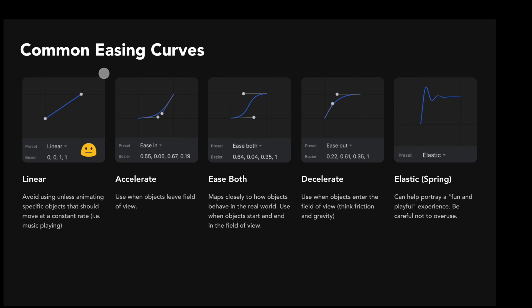Let's talk about easing. Easing is the physics of our interaction and can really help influence an interaction's smoothness. There are five main easing curves: linear easing, ease in (also known as accelerate), ease both (also called ease in/ease out), ease out (also known as decelerate), and elastic easing (also called spring easing). Easing is super important because applying it to our interactions can help our digital products emulate the physical world, which is a marker of good product design. We want everything on the web or on our phones to feel very natural and familiar.